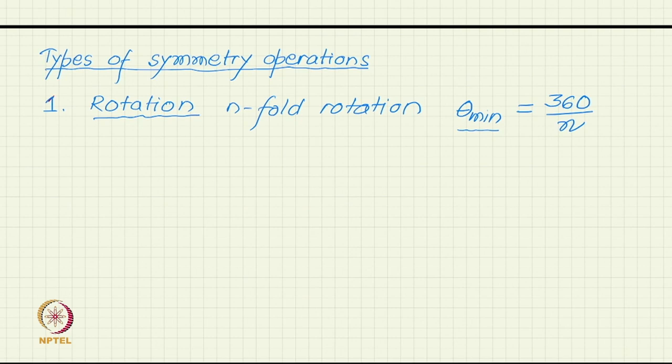The square does have 2-fold symmetry, but as a subgroup of 4-fold symmetry. For an actual description of its symmetry we say it has 4-fold symmetry rather than 2-fold symmetry, because 2-fold symmetry is not a complete description — the object has a higher symmetry. So that is rotation, and you have a rotation axis.